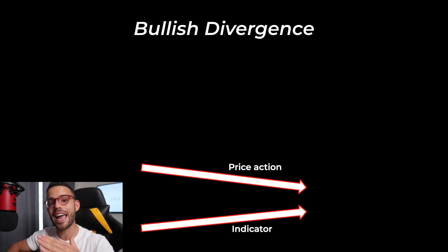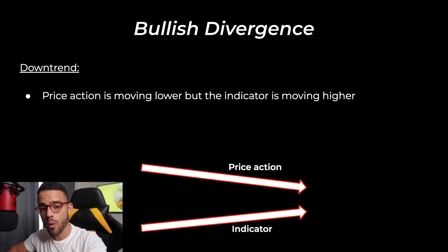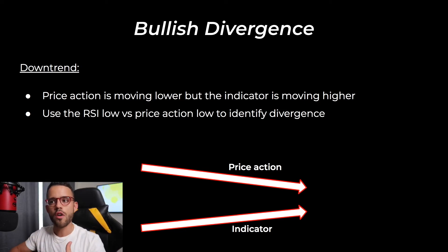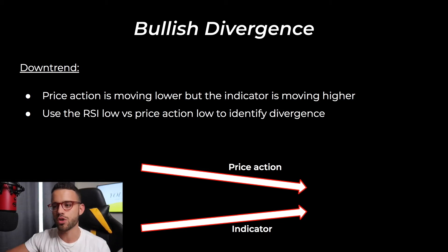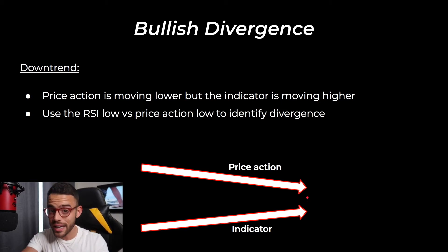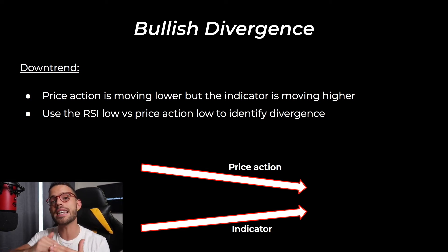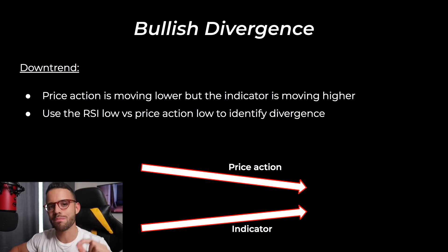Bullish divergence is when the indicator is rising and price action is falling — price is in a downtrend overall. So price action is moving lower, but the indicator is moving higher. You use the RSI low versus the price action low to identify that divergence. Your RSI low will be a different reaction point than your price action low. The RSI low all the way at the left of the arrow is a different point than the price action low at the end of the top arrow. Bullish divergence is when the indicator is bullish — saying we should be long-biased overall — but price action is falling.